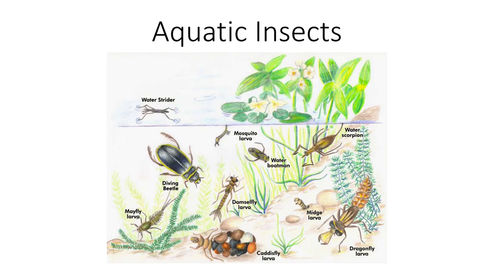Some representatives of nearly all orders of insects live in water, and there have been many invasions of freshwater from the land. Insects have been almost completely unsuccessful in marine environments, with a few sporadic exceptions such as some water striders and larval dipterans.